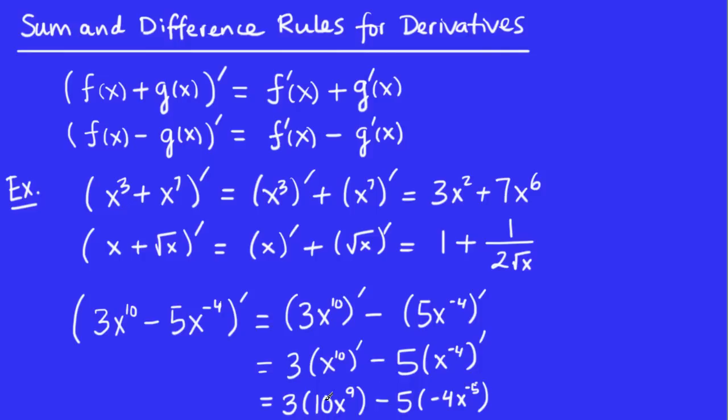And notice there's no more prime symbols, so that means we've done the derivative. The only thing we have to do now is to maybe simplify it a little bit. 3 times 10 is 30.